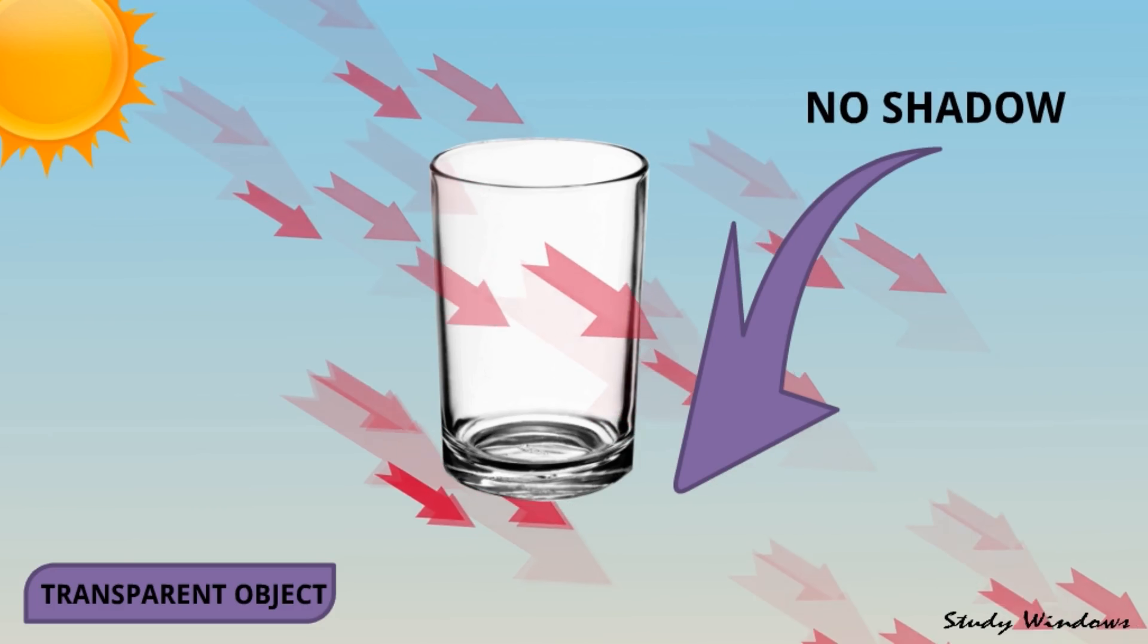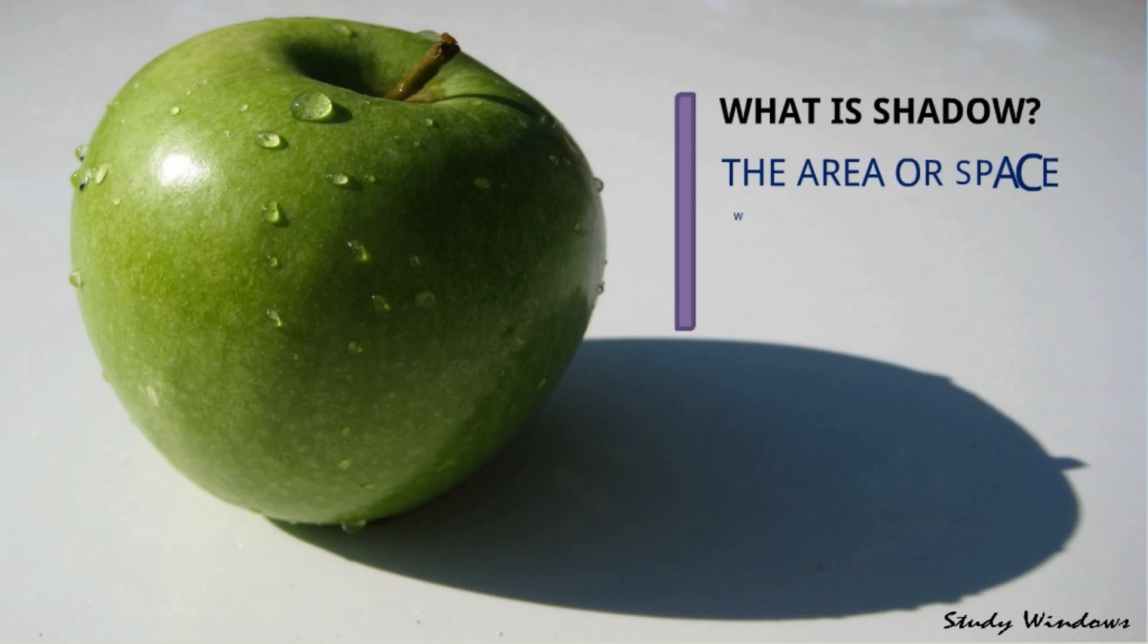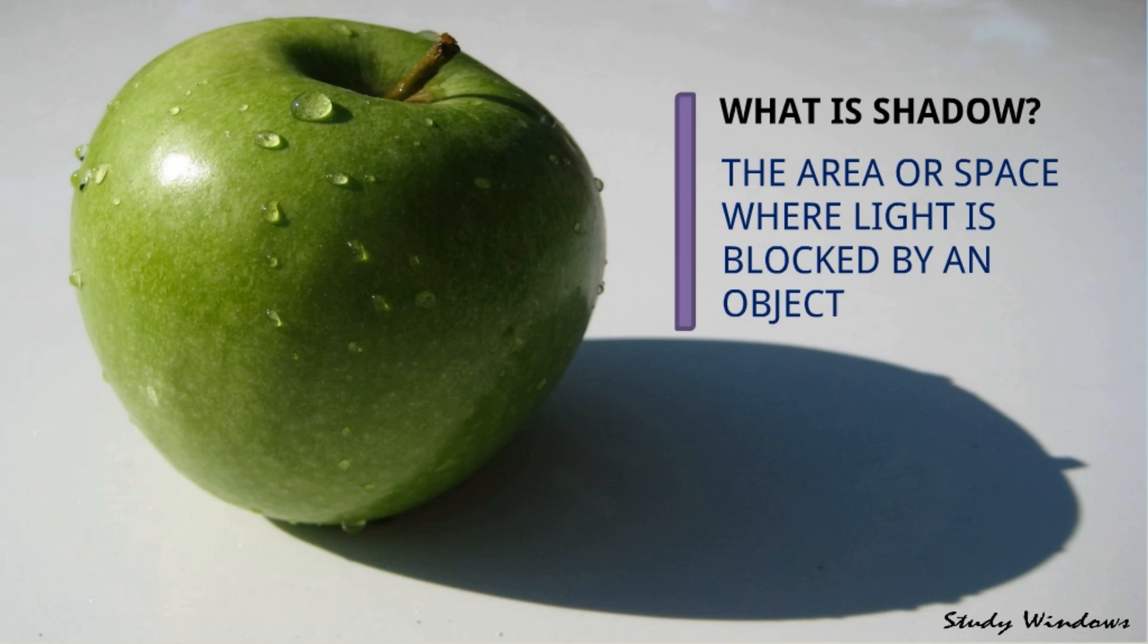So what is shadow? The area or the space where light is blocked by an object is known as shadow.